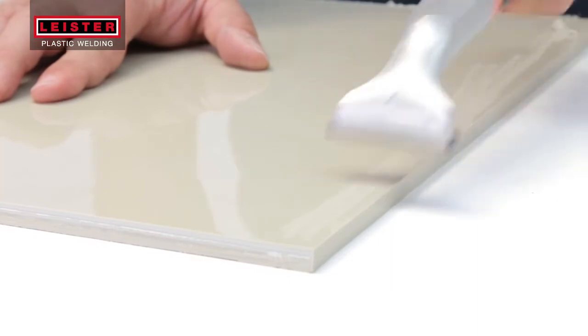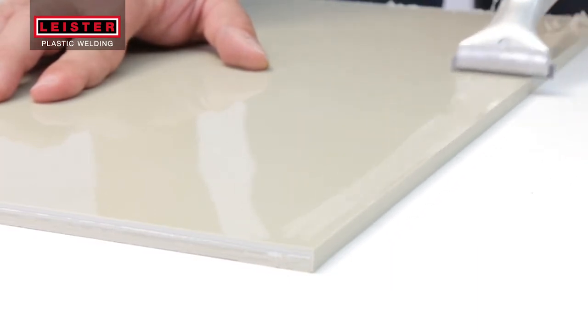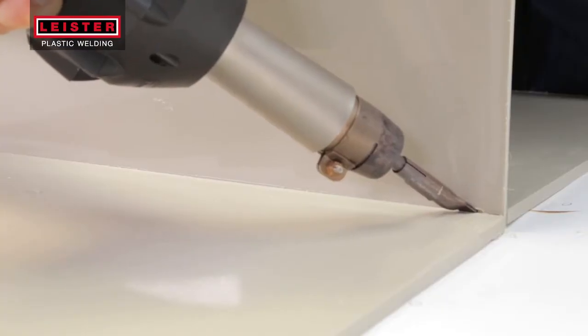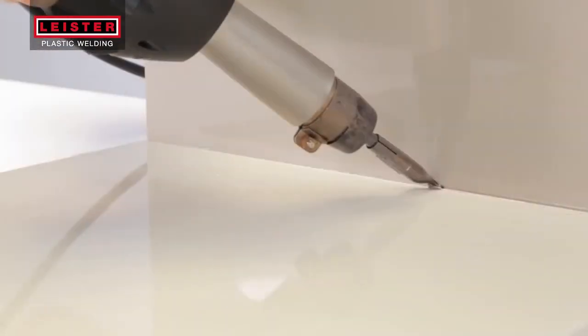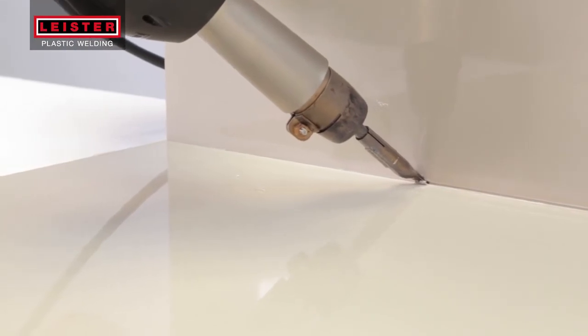For an ideal welding seam result, remove the invisible oxide layer from your material using a scraper. If necessary, parts can be tacked for welding using a Leister hot air hand tool and tacking nozzle.